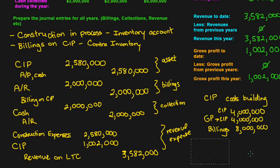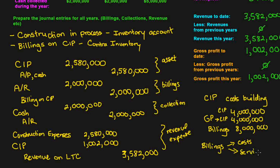Practically speaking, billings represent what the customer pays — not just for construction costs, but also for your time and profit generation. Billings encompass both the costs and the service of creating the structure, including labor. So it makes sense that billings must match the gross profit plus costs that are both accounted for in the Construction in Process account.